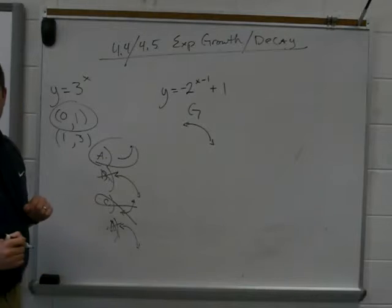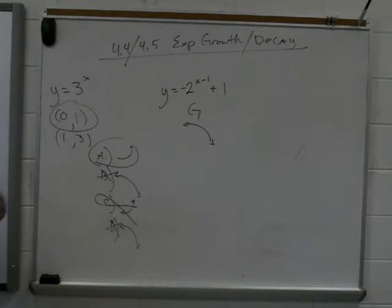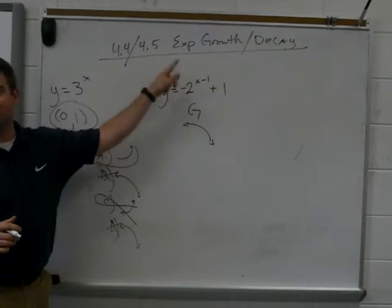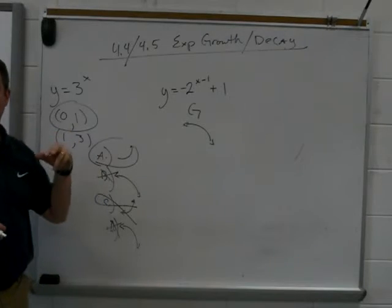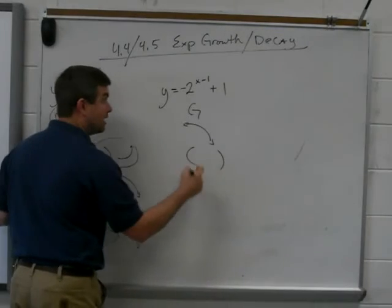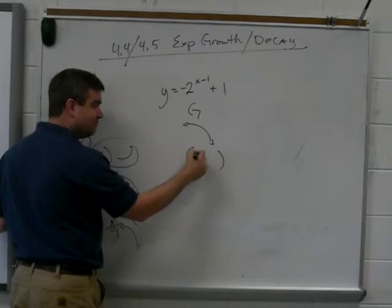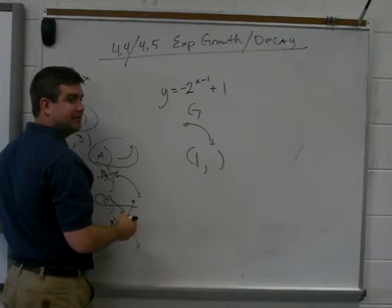You with me so far? Now we have to pick a point. I made it as hard as I can make it. What point can I plug in right here that will make all of this very easy and I can move right on to my next point? I could plug in zero, but that wouldn't be easy. That would give me negative one. What's better? Positive one.